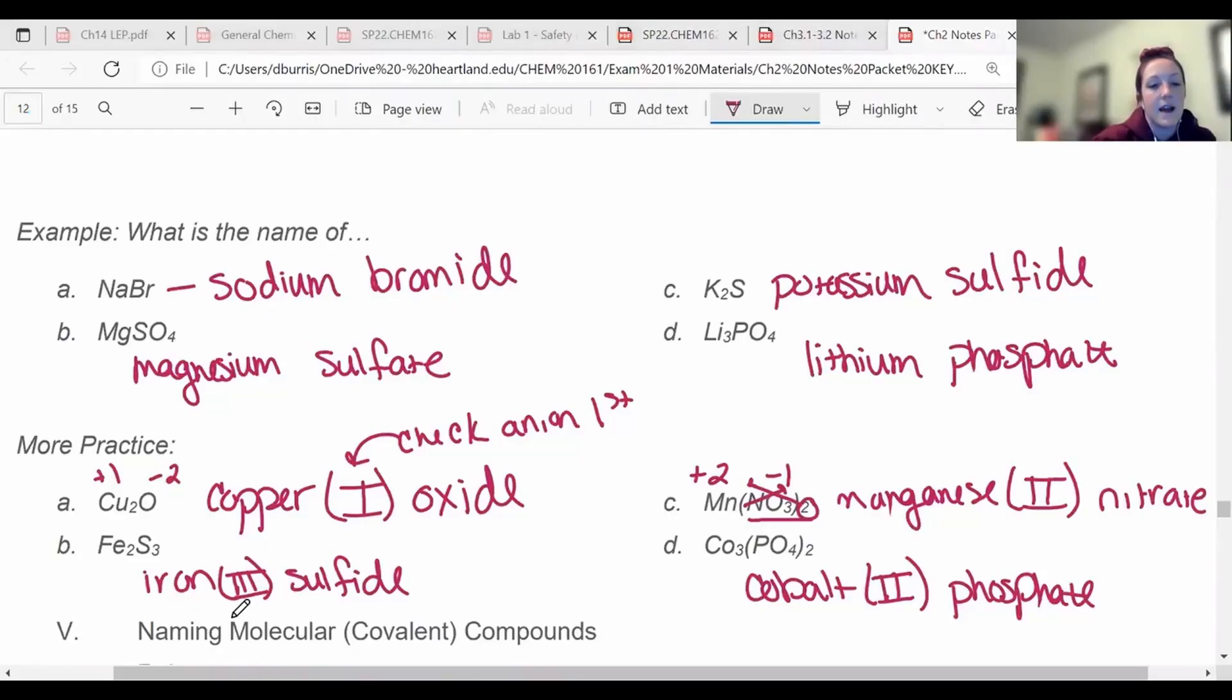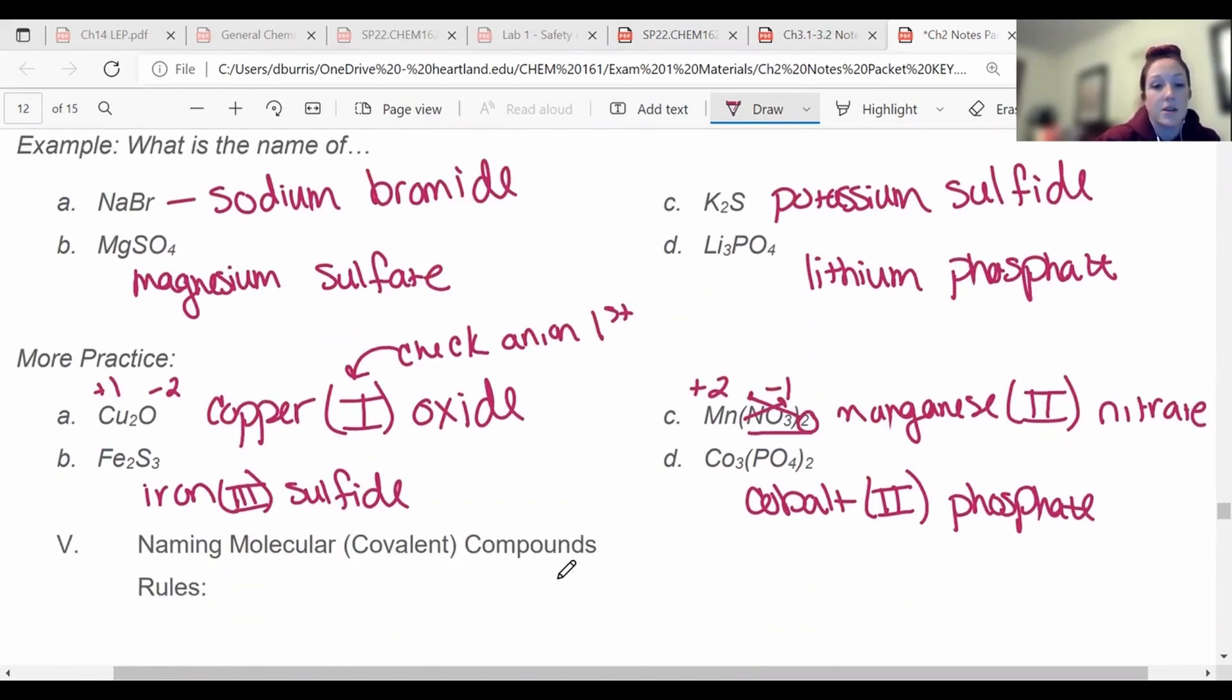So you try the next two and then check your answers. All right. These should be iron three sulfide and cobalt two phosphate. And if you need help finding those charges again, let me or Adara know and we can help you.